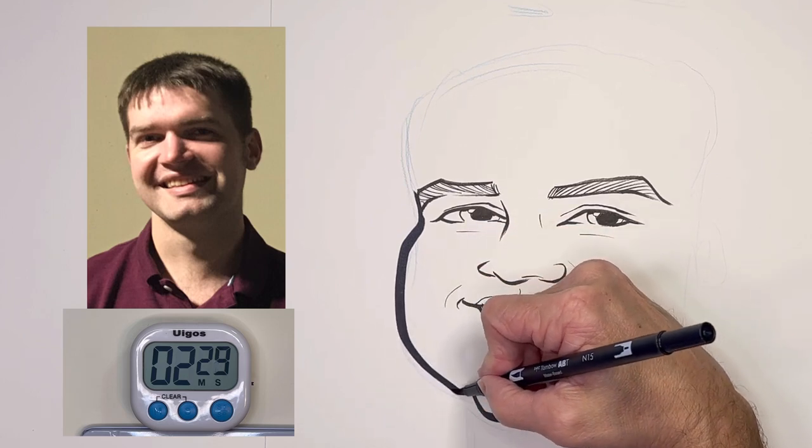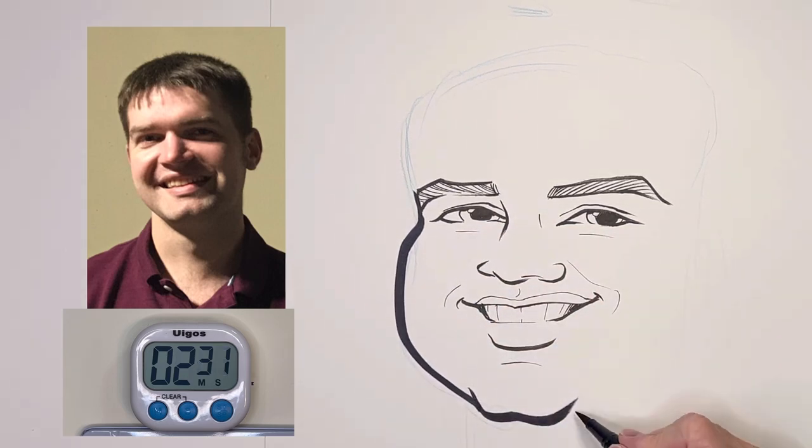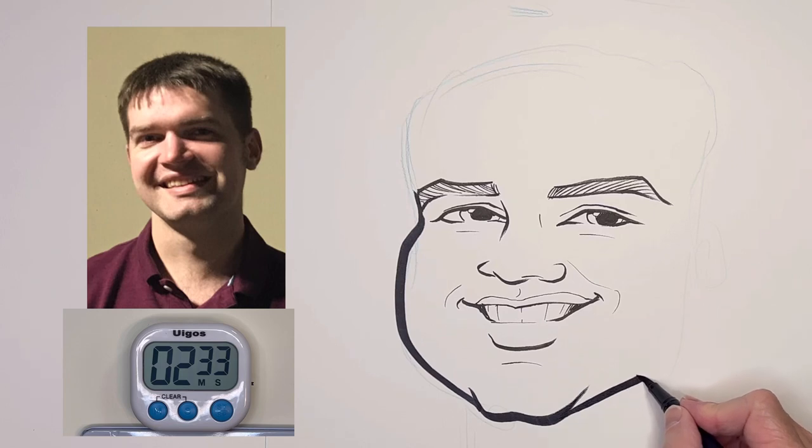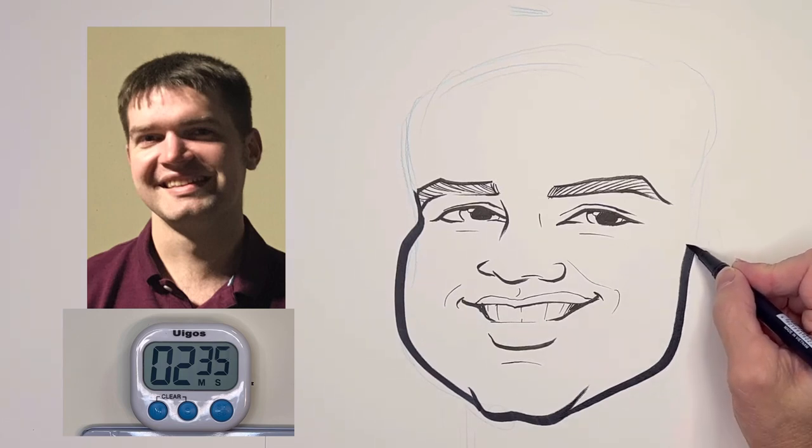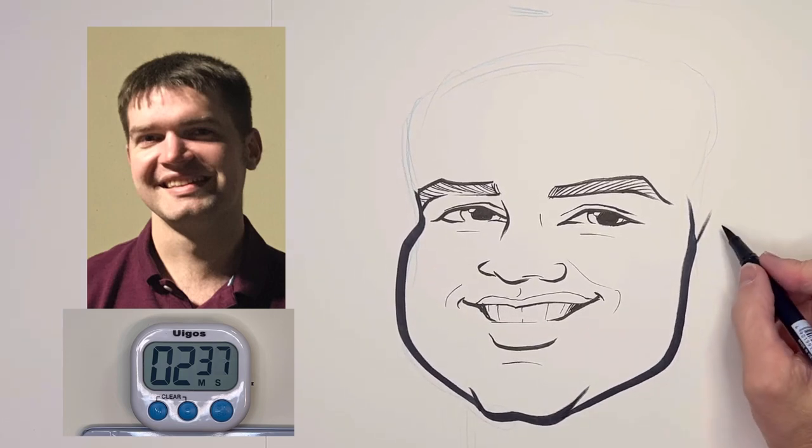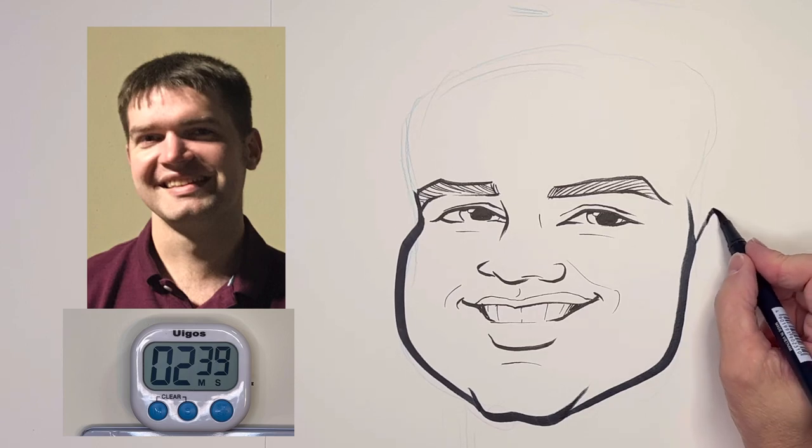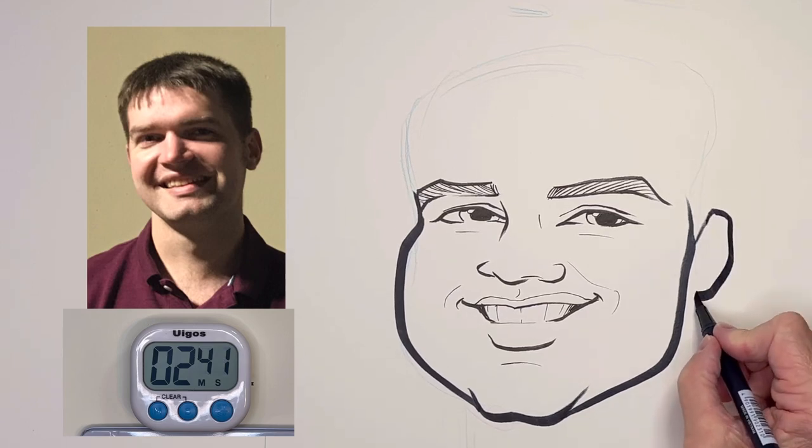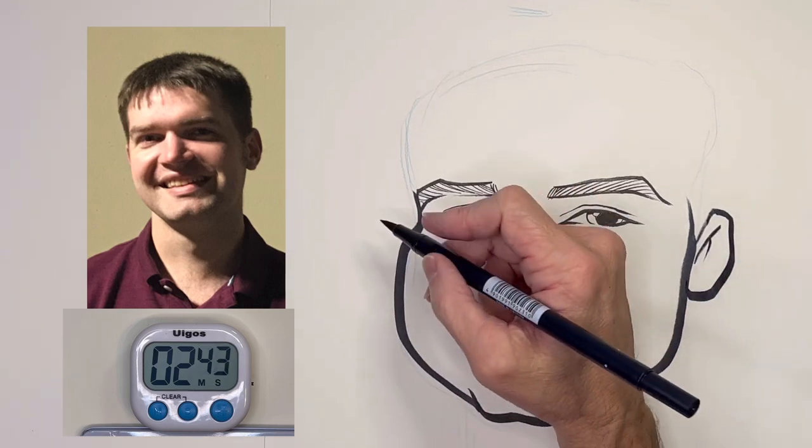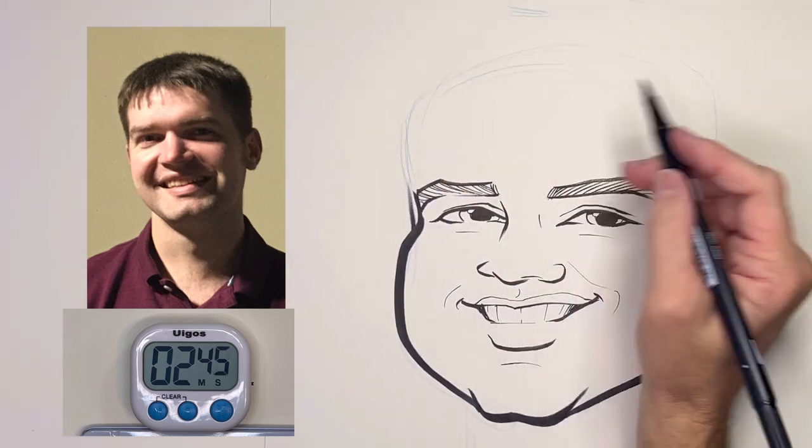Now I'm drawing the right cheek all the way down to the jawline and connect it to the chin. I'm using much thicker lines now. I start the left side going up. I'm drawing his ear. To me, it looks small compared to his head, so I make it small.